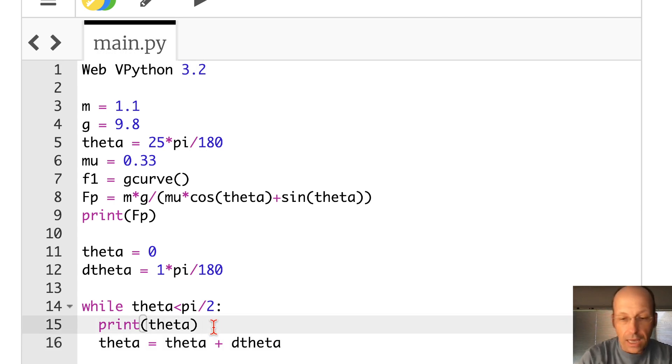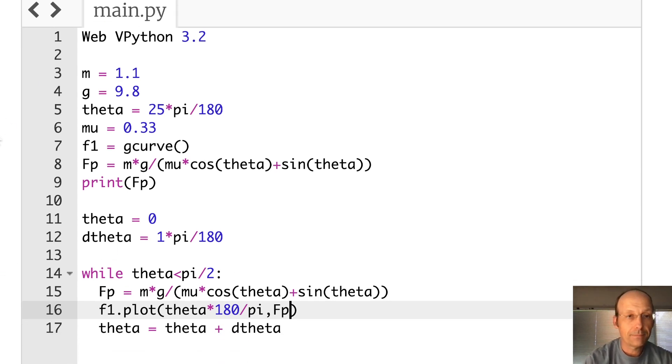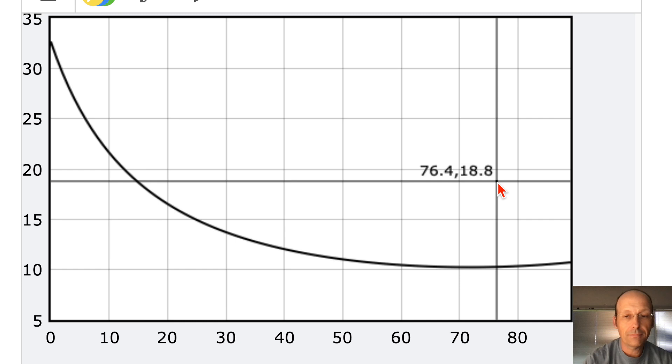But I don't really want to do that. What I want to do is to calculate fp. So let's do that. I'm just going to copy this. And my value of theta changes, so my value of fp is going to change. Now I'm going to plot f1.plot. I don't want to plot number 1 versus number 2, but my x-coordinate I want as theta. And let's do it in degrees. So I'm going to convert back degrees times 180 divided by pi, and then fp. And then I'm going to increase the value of theta and do it again. That's it.